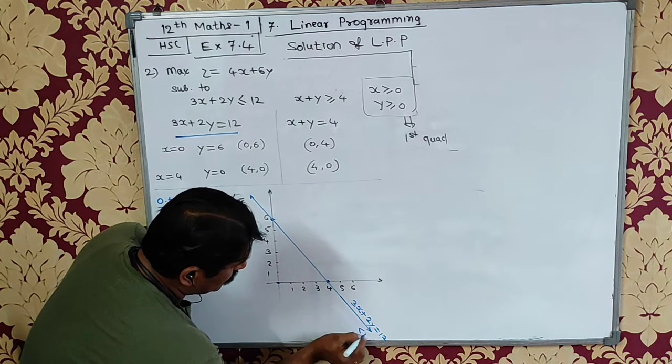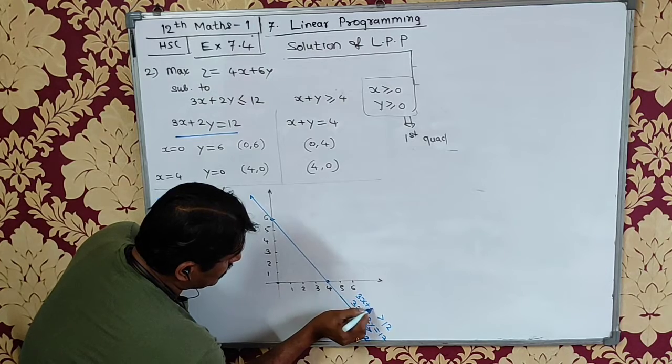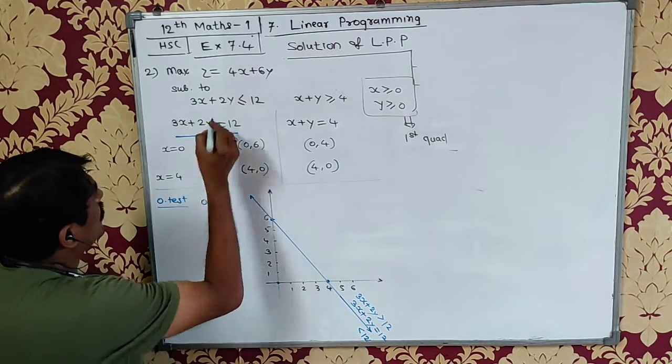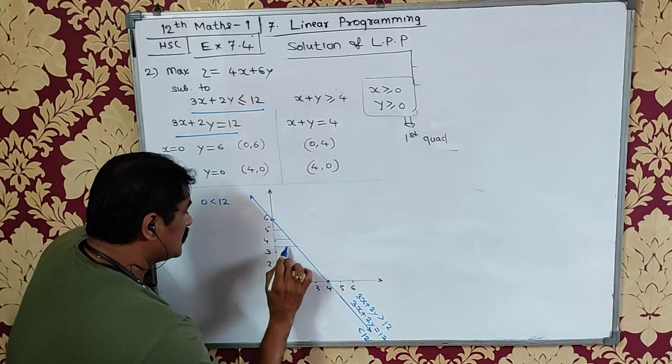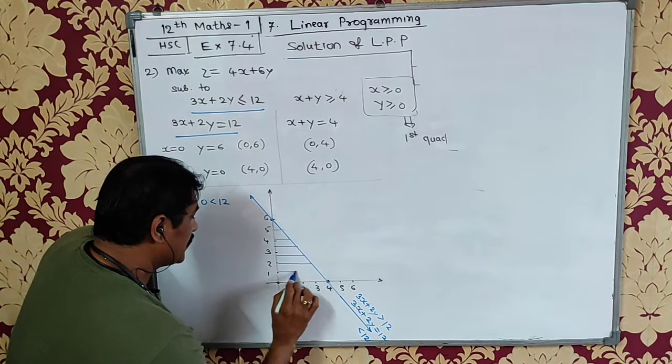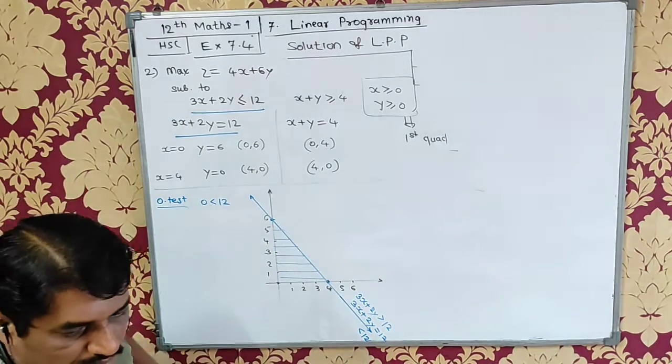Now if it is less than 12, I want to shade all the points on the origin side but in the first quadrant. Is this clear to you all?